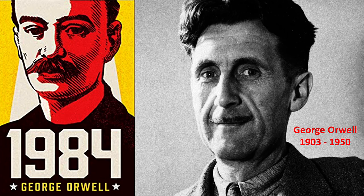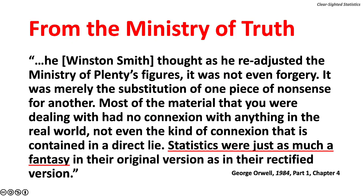In his dystopian novel 1984, George Orwell's protagonist Winston Smith underscores the terrifying cynicism fostered by totalitarianism. Smith is a mid-level bureaucrat at the Ministry of Truth going through a major crisis. Orwell writes: 'It is not even forgery. It is merely substitution of one piece of nonsense for another. Most of the material had no connection to anything in the real world — not even the kind of connection contained in a direct lie. Statistics were just as much fantasy as the original version as in the rectified version.'